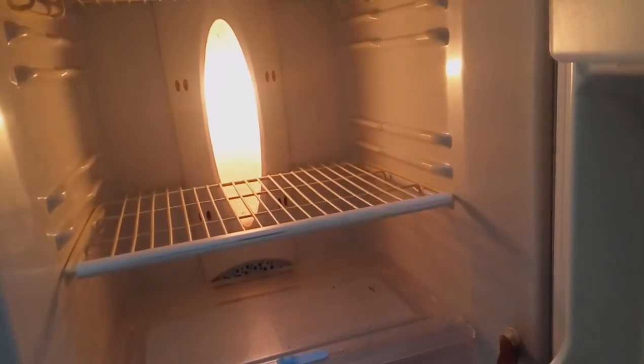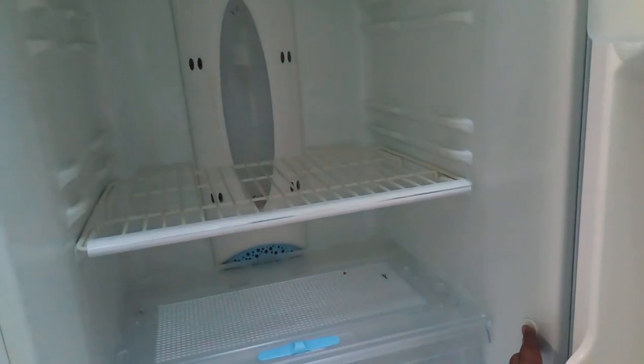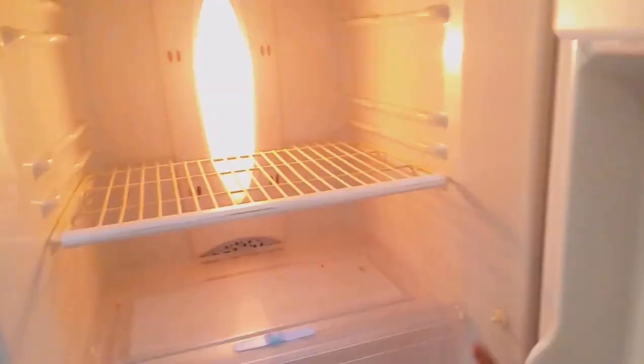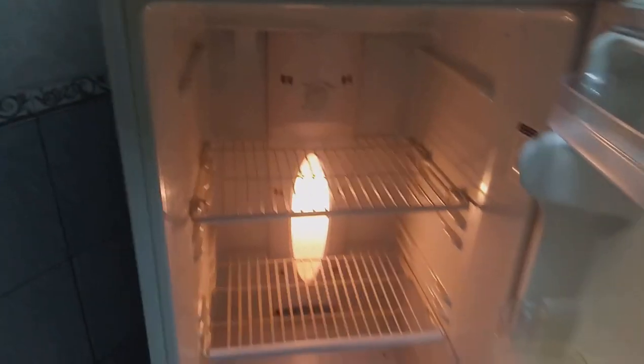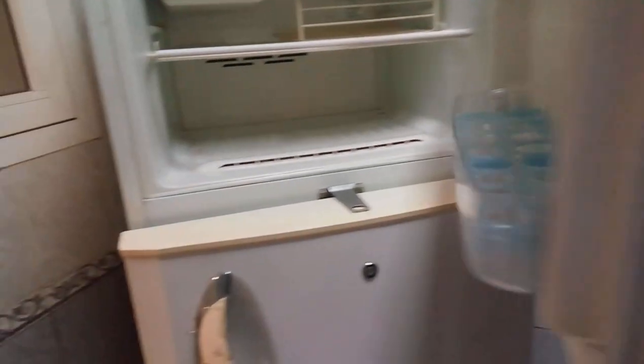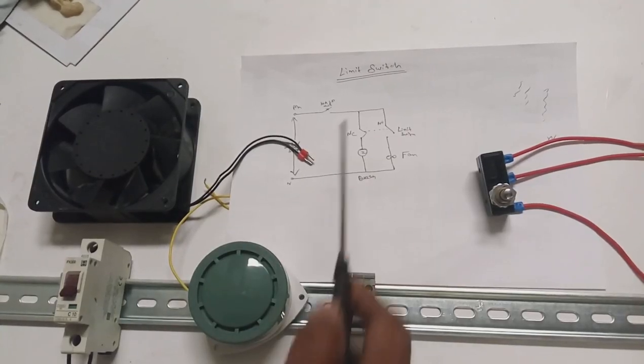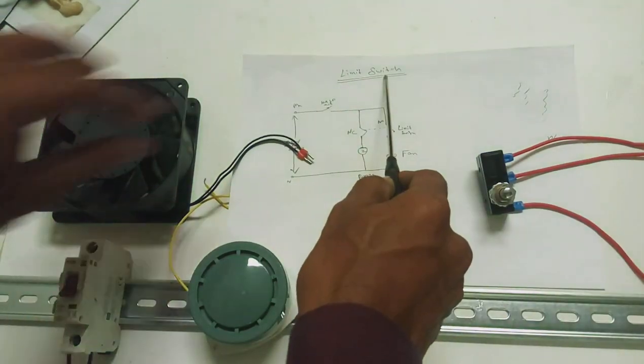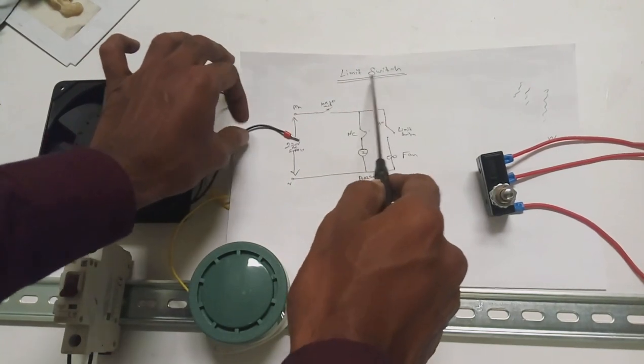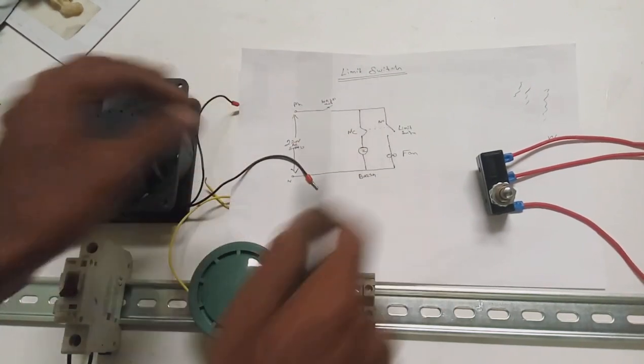If you have a limit switch, it can be applied to the fridge. The fridge will automatically close, and the freezer will automatically turn off via the limit switch. The limit switch will automatically change state. Once you click in the refrigerator, you need a limit switch and auto settings.